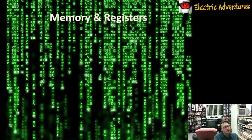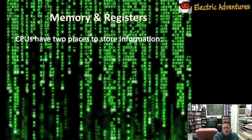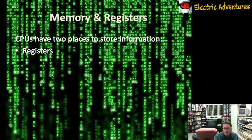The very first thing we need to cover is memory and registers. Because at the end of the day, programming is all about moving ones and zeros around from one place to the other. There are two places inside a computer where you store those things: registers, which are actually inside the CPU themselves and used by the CPU to add numbers up and manipulate information.